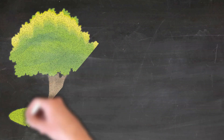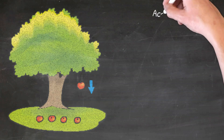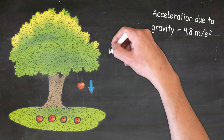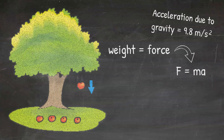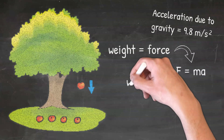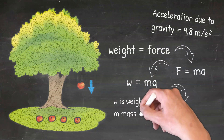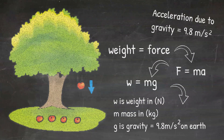We talked in our forces video about gravity and the acceleration due to gravity. Gravity is a force that pulls us towards the Earth, and the acceleration due to gravity is 9.8 meters per second squared. Because weight is just a specific type of force, we can use the formula W equals MG, where W is weight in Newtons, M is mass in kilograms, and G is the acceleration due to gravity, which is 9.8 meters per second squared on Earth.